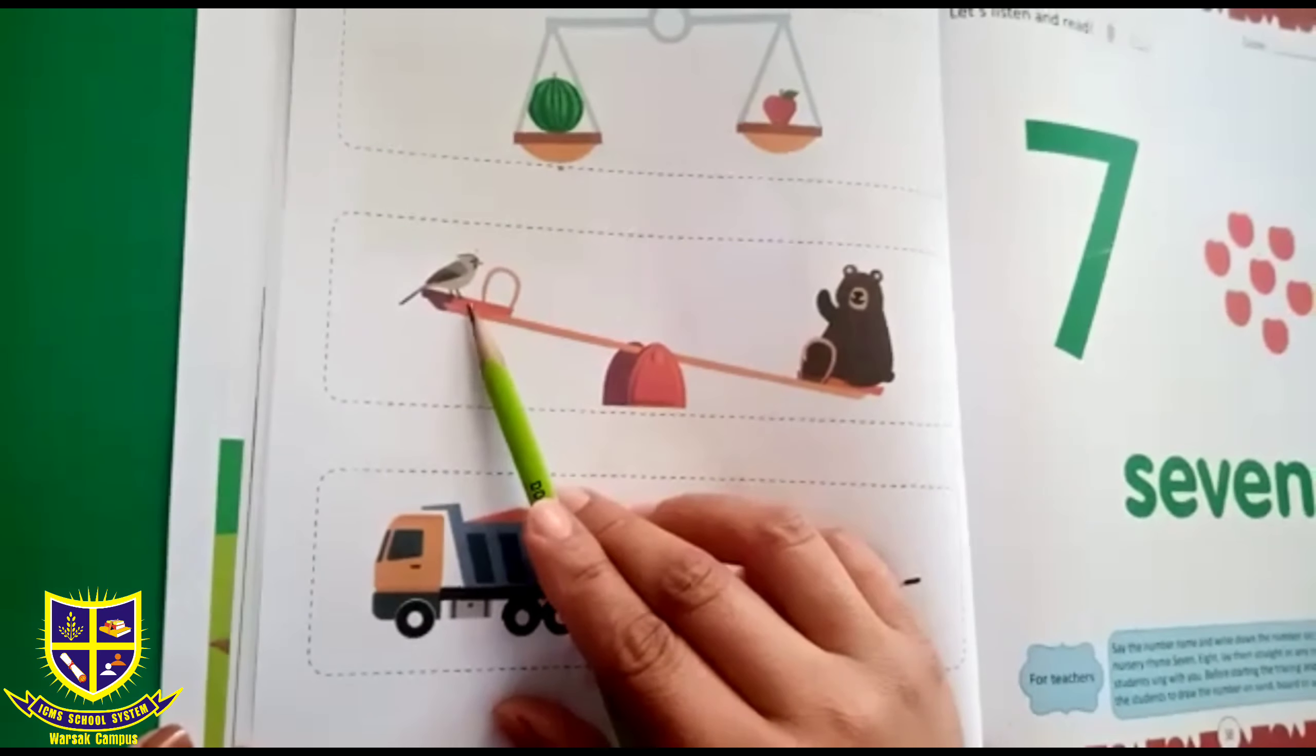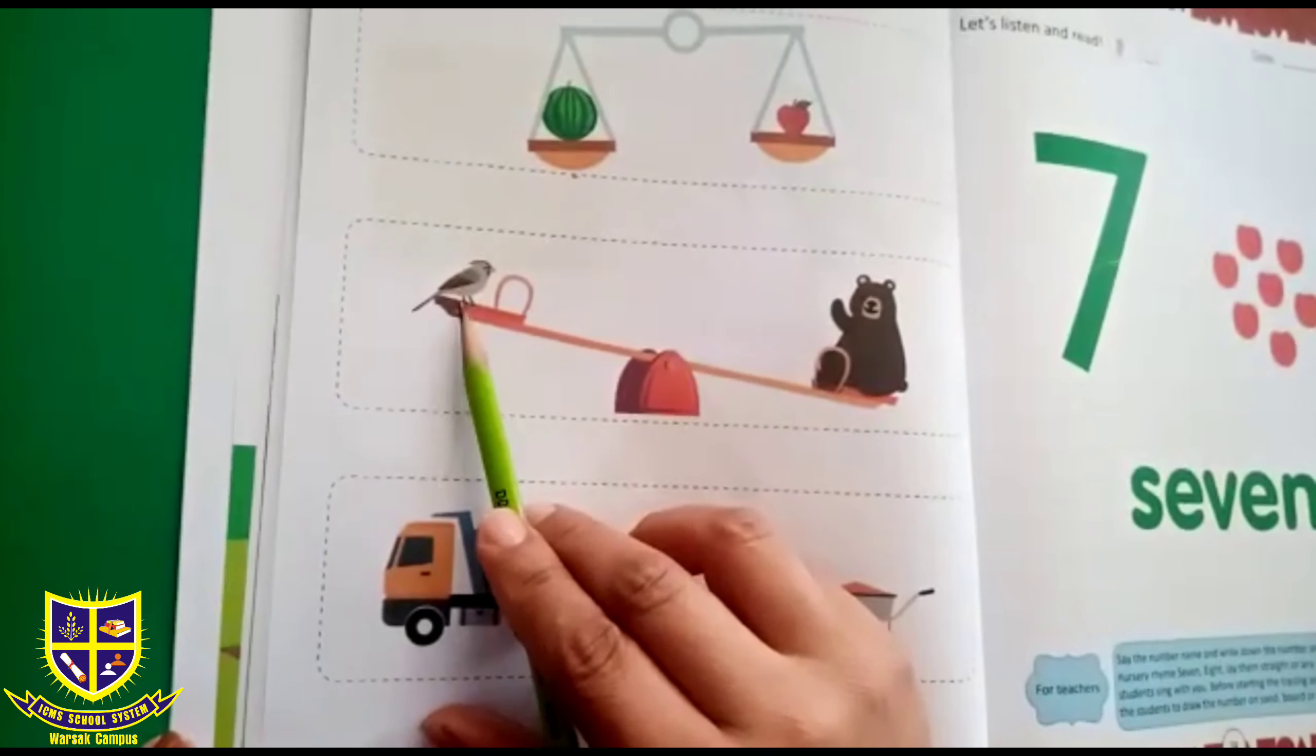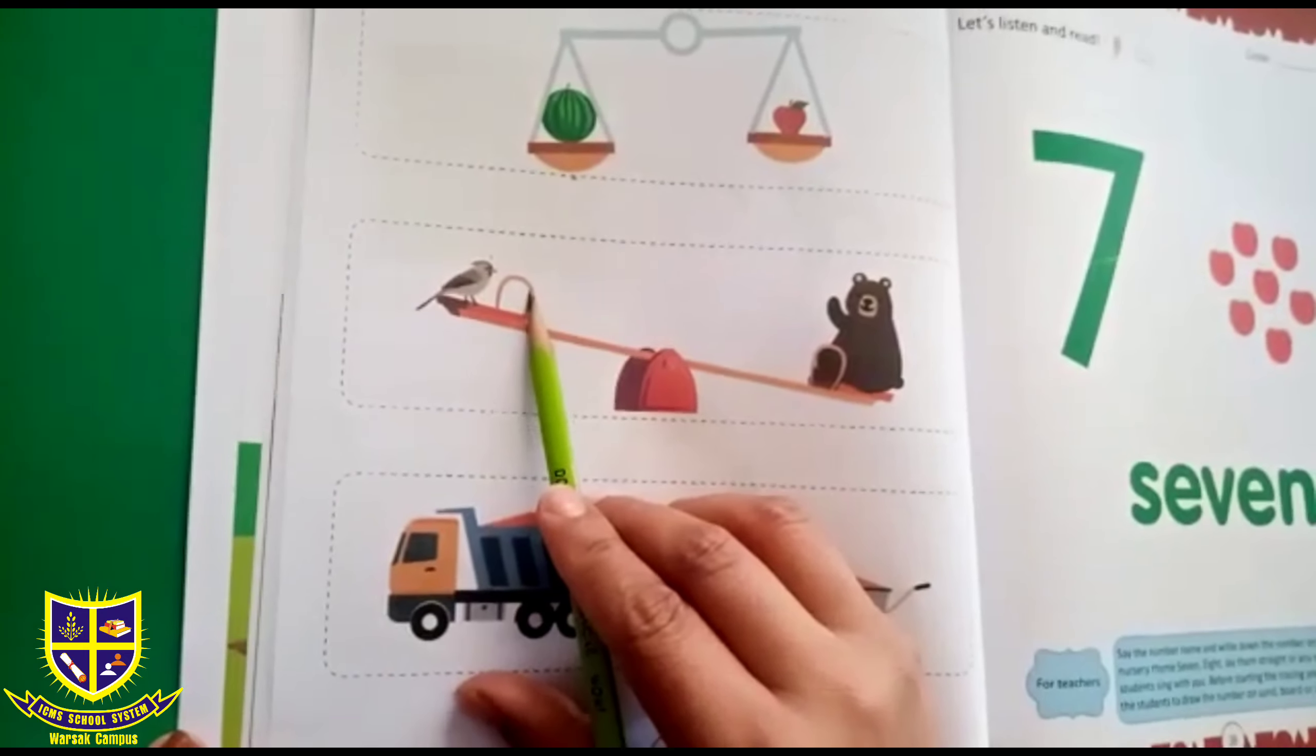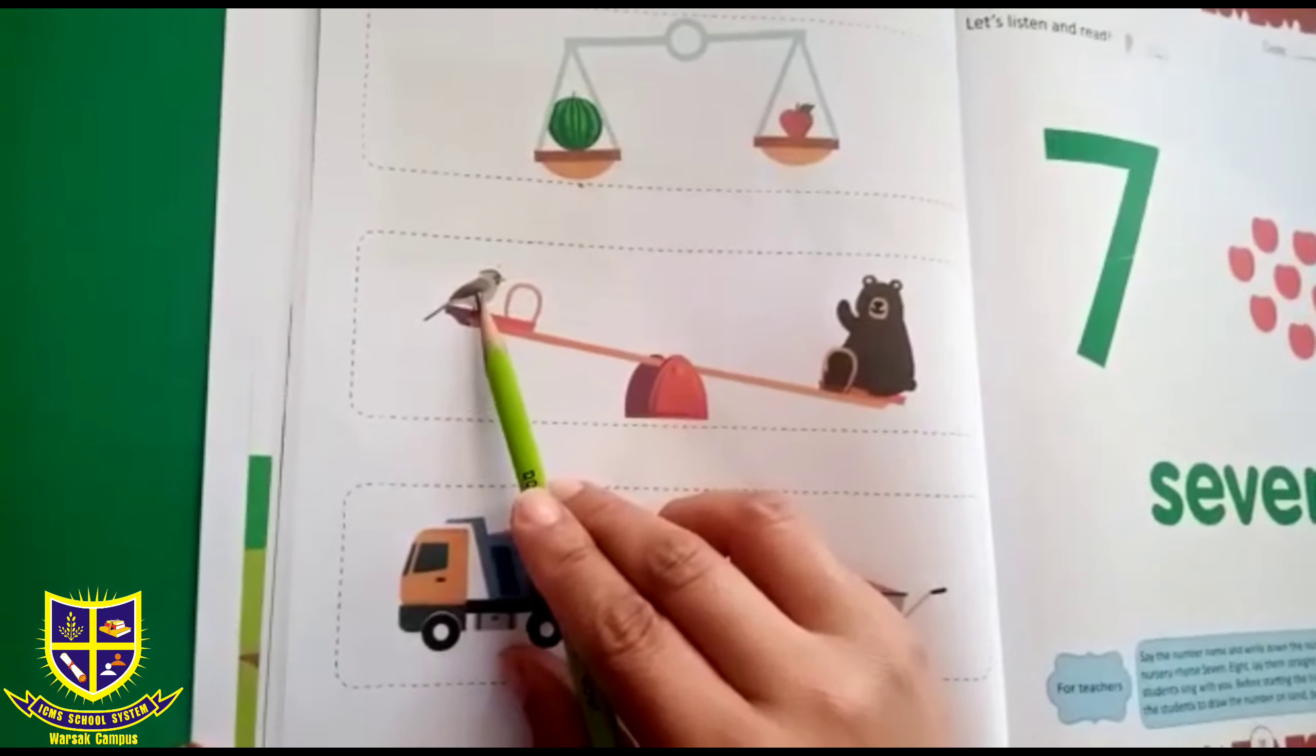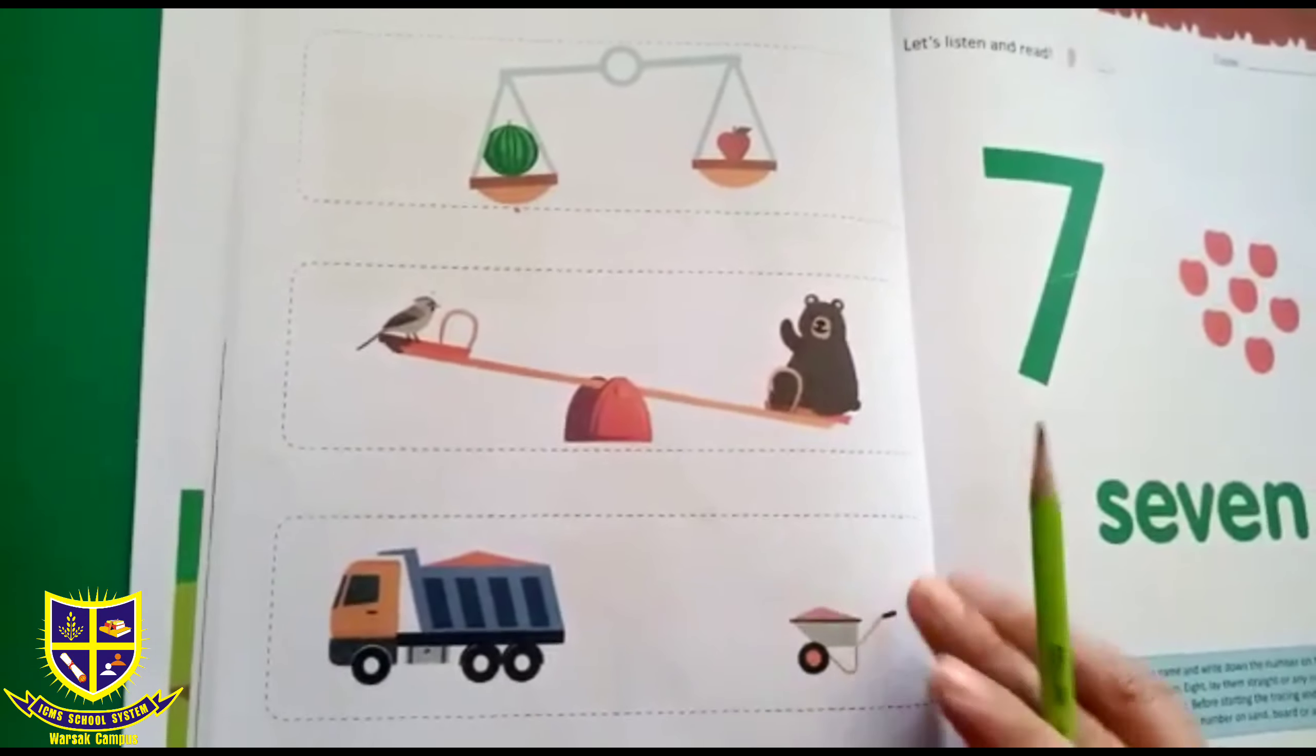When you sit on one side and your fellow friend sits on the other side, if he is heavier than you in weight, then he will go down to the ground and you will go up in the air. And if you are heavier than him, then you will go down and he will be in the air. Like same, you have seen that the sparrow is in the air and the bear is down on the ground.